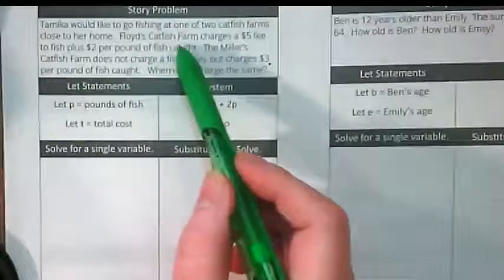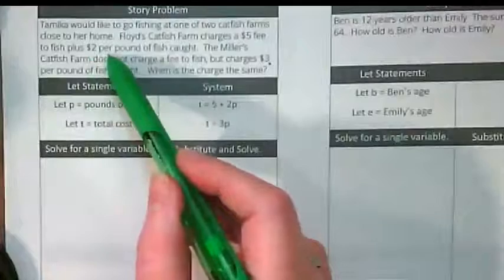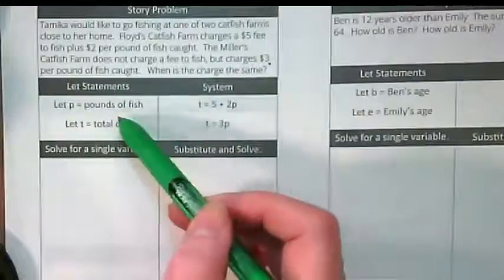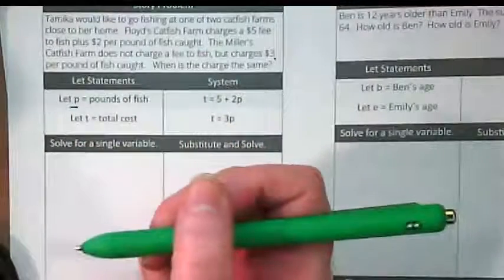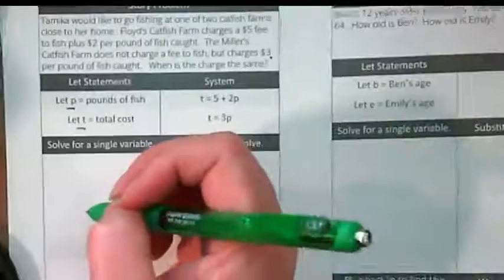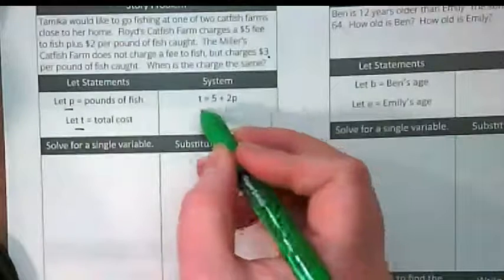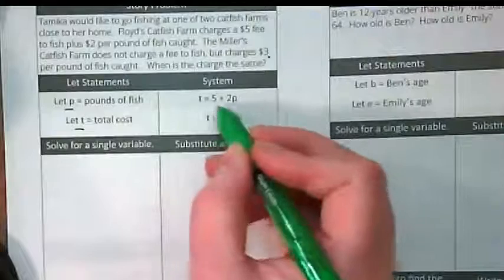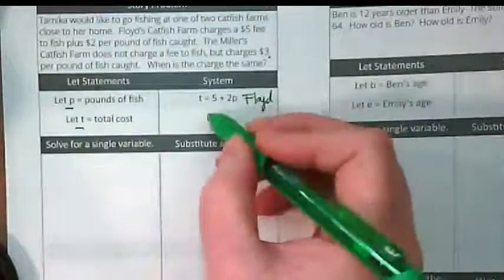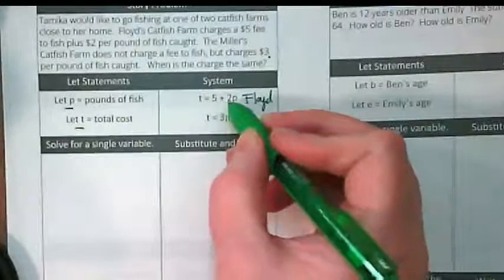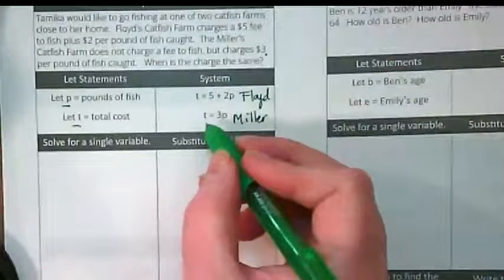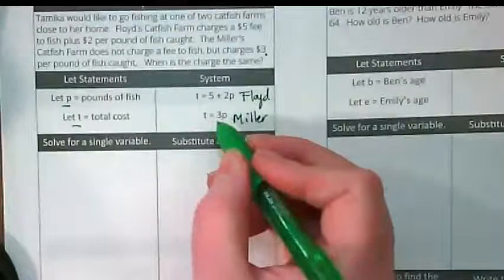So we have two catfish farms. Floyd's catfish farm charges a $5 fee to fish plus $2 per pound of fish caught. Miller's catfish farm does not charge a fee to fish, but charges $3 per pound of fish caught. What's already been done for us is we're going to use P for pounds of fish and T for total cost. The other part that is here for us is we have two equations. Which farm does this first equation go with? Does it go with Floyd or Miller? It goes with Floyd. Why? Because the total is $5 fee plus two per pound. That means this equation is the Miller farm—the total equals $3 per pound.